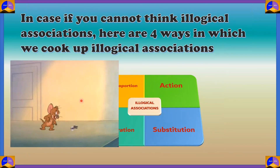For outer proportion, you can see a still from Tom and Jerry where the mouse is actually bigger than the cat and tries to chase it. This is called outer proportion — you make your object very large or very small relative to what it normally should be.